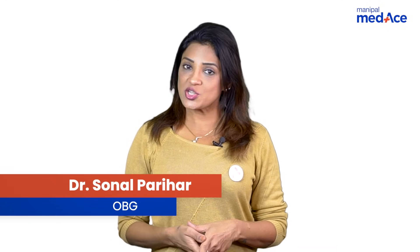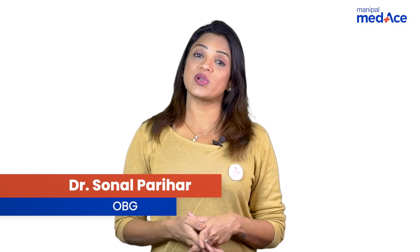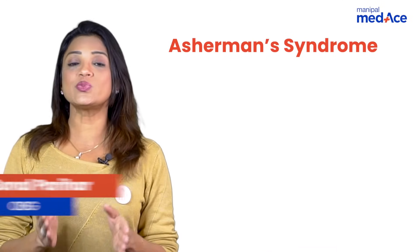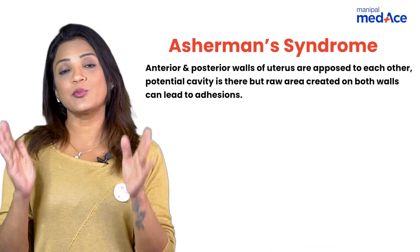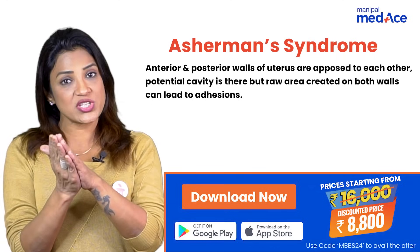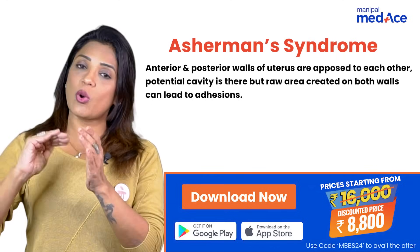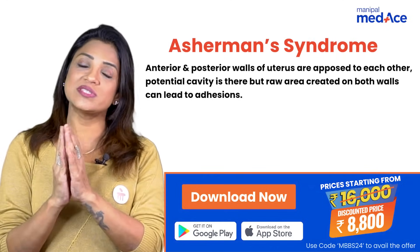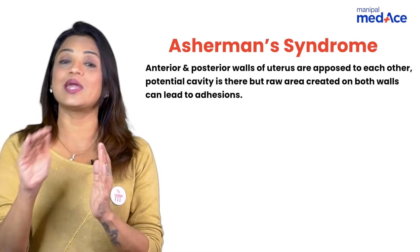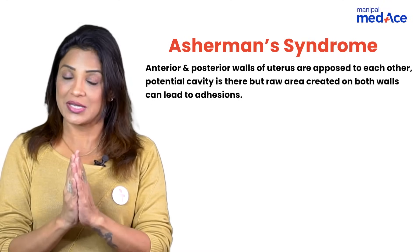Let's quickly revise what is Asherman's syndrome and what is the management. Asherman's syndrome is when the anterior and the posterior walls of the uterus are opposed to each other. There is a raw area on both the walls that basically obliterates the entire potential cavity.